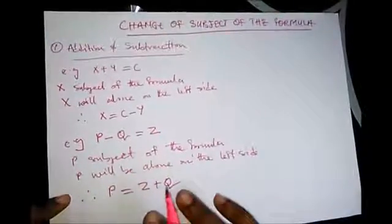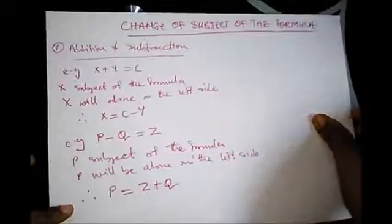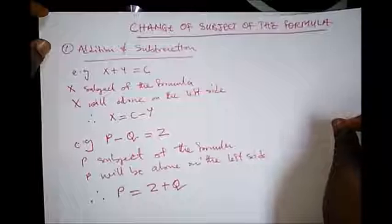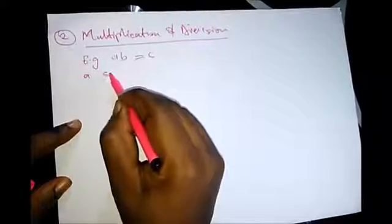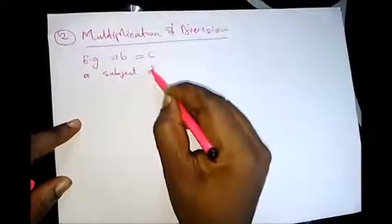Now let's look at operations involving multiplication and division. For example, if we have a times b equal to c — a multiplication operation — to make a the subject of the formula, we have to divide both sides by b.